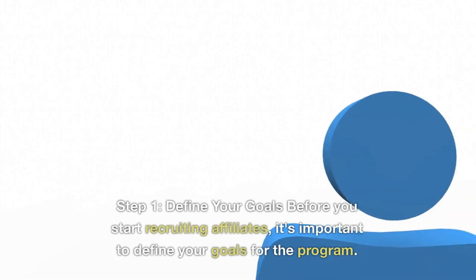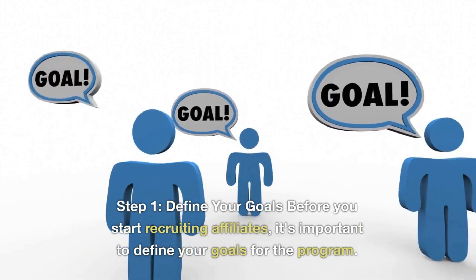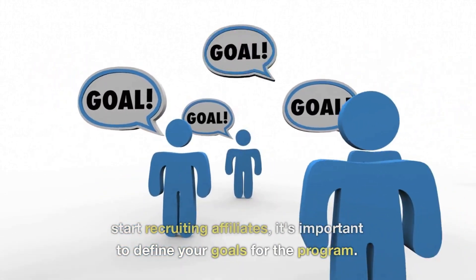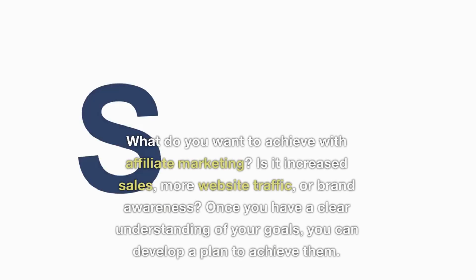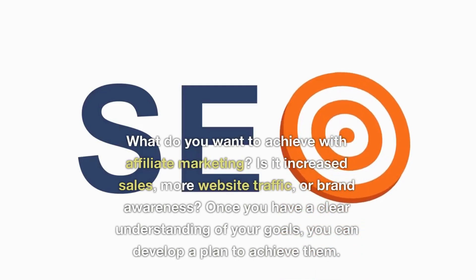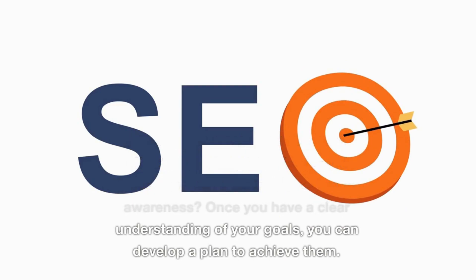Step 1: Define your goals. Before you start recruiting affiliates, it's important to define your goals for the program. What do you want to achieve with affiliate marketing? Is it increased sales, more website traffic, or brand awareness? Once you have a clear understanding of your goals, you can develop a plan to achieve them.